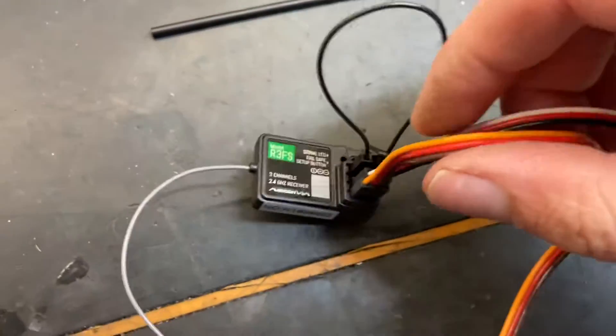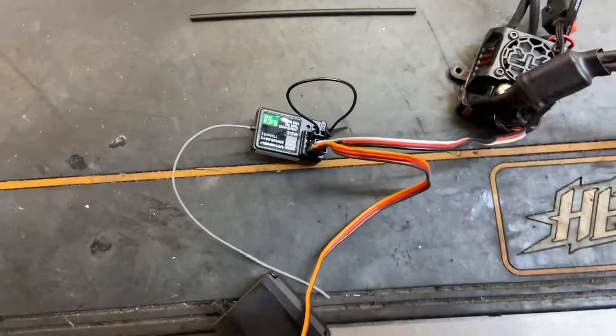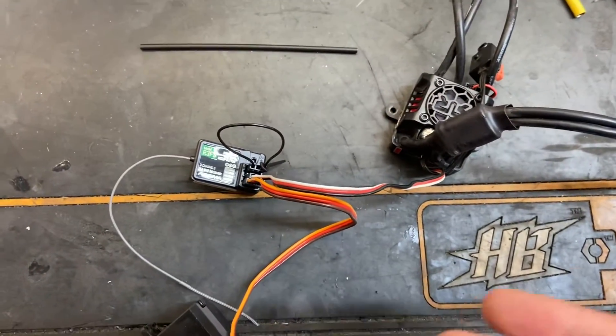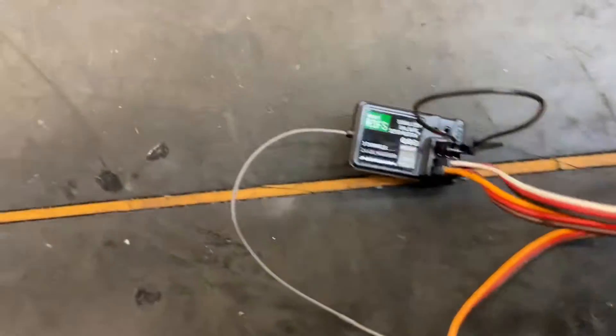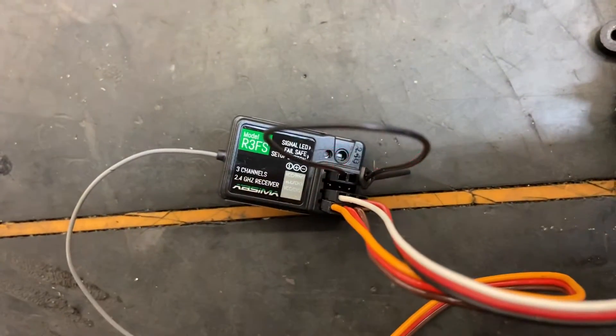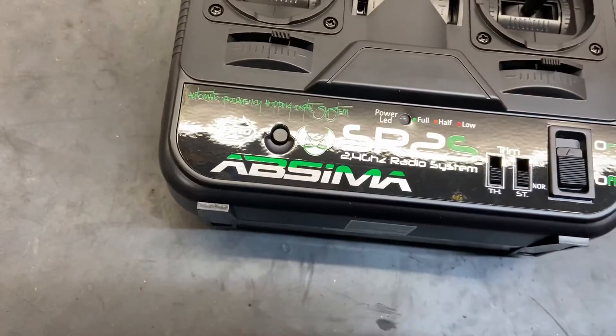So what you need to do is power up the receiver first, and then the light should start blinking. Then we've got a bind button on the transmitter.